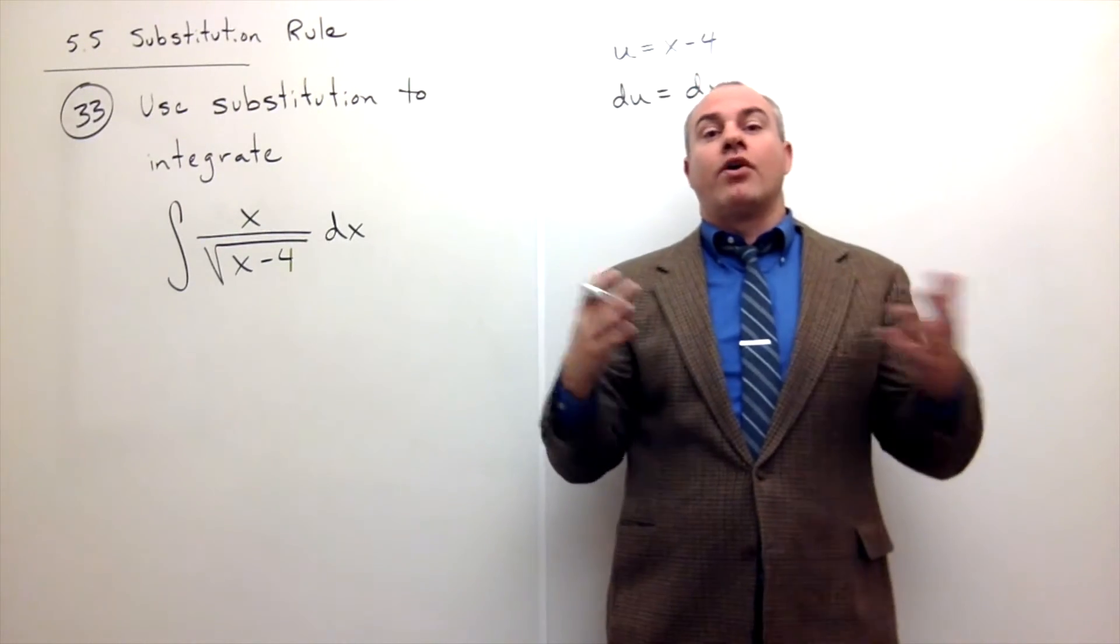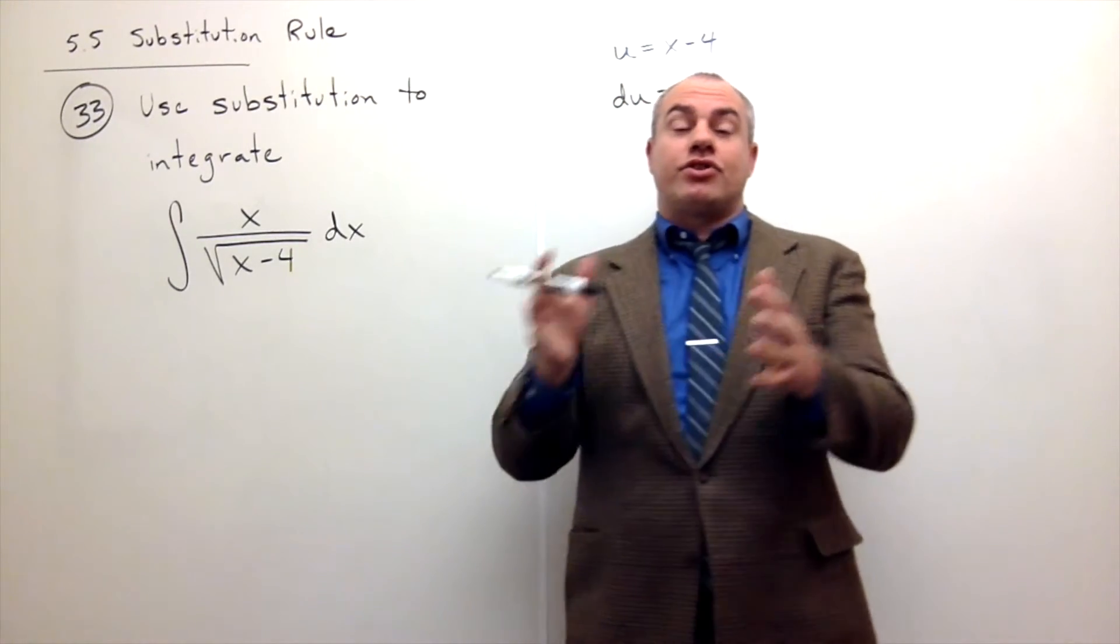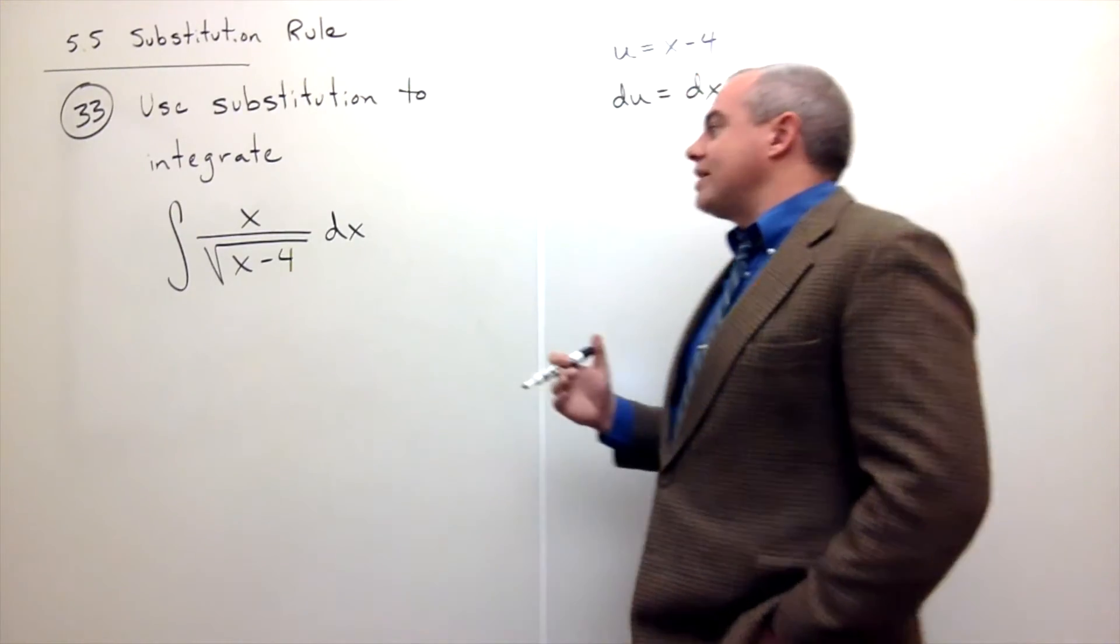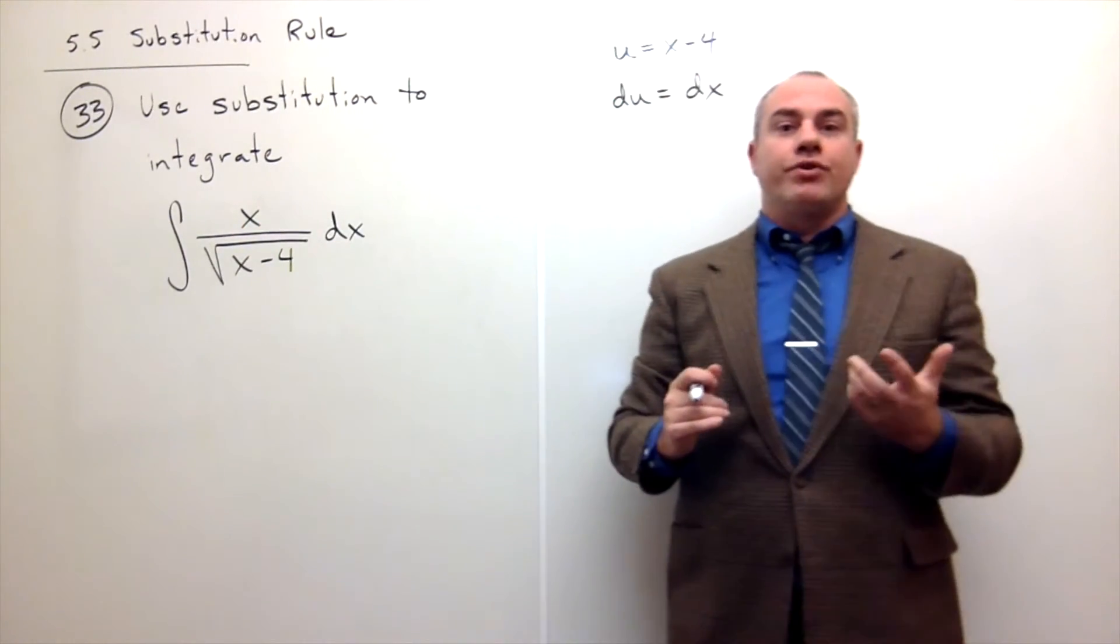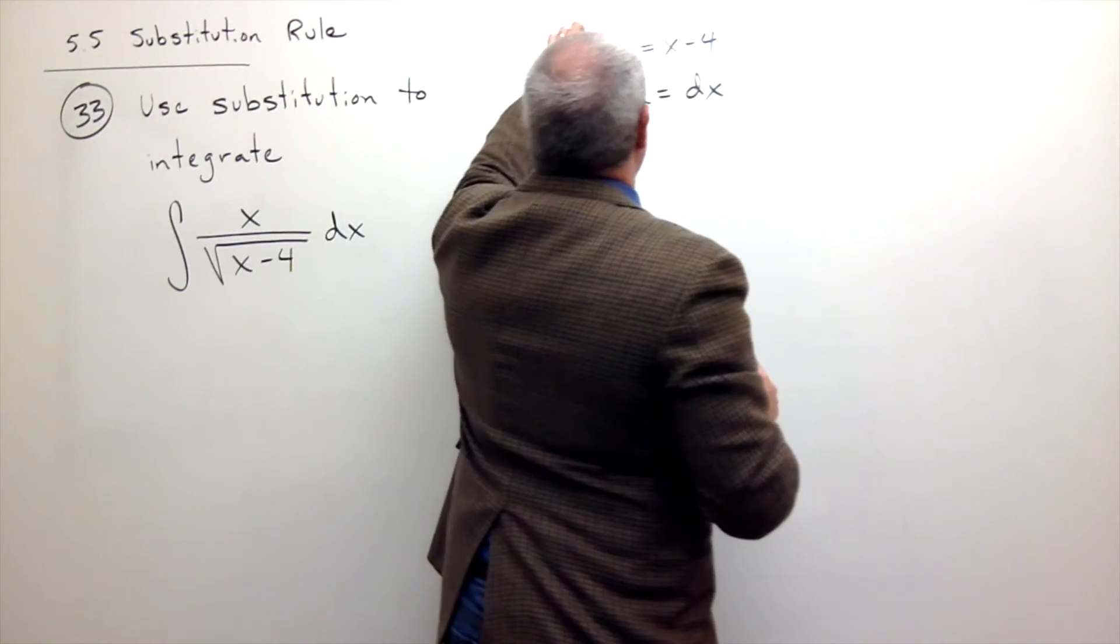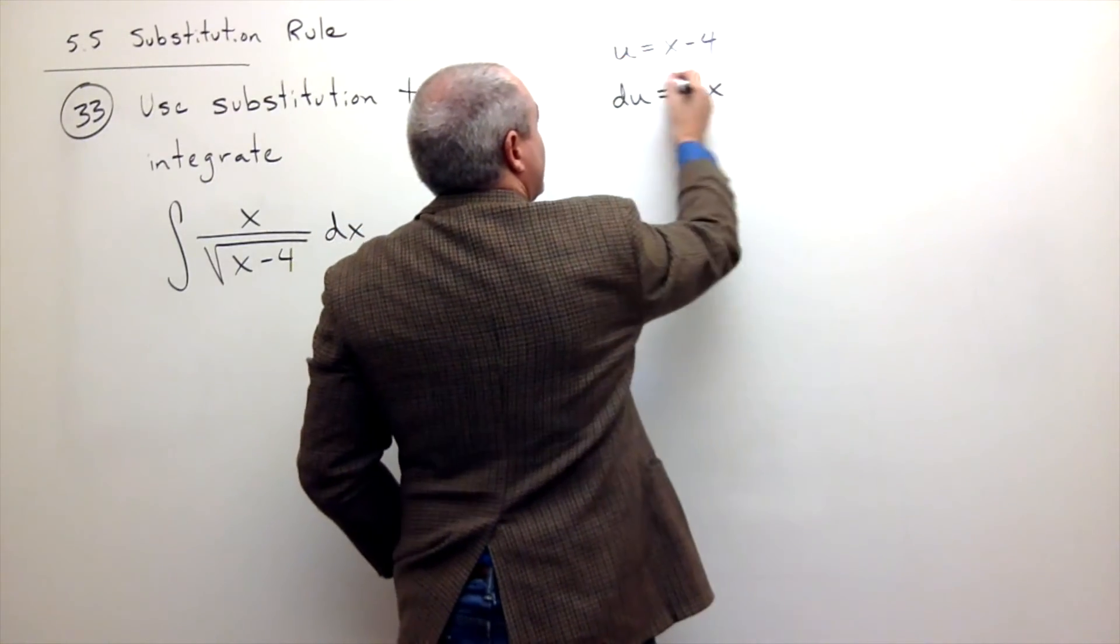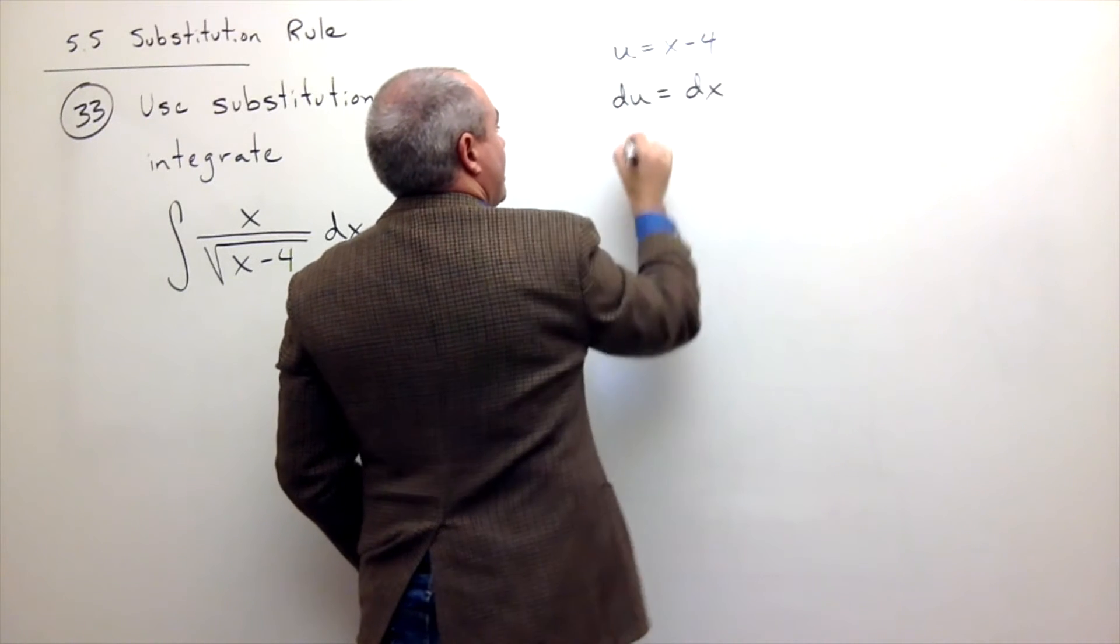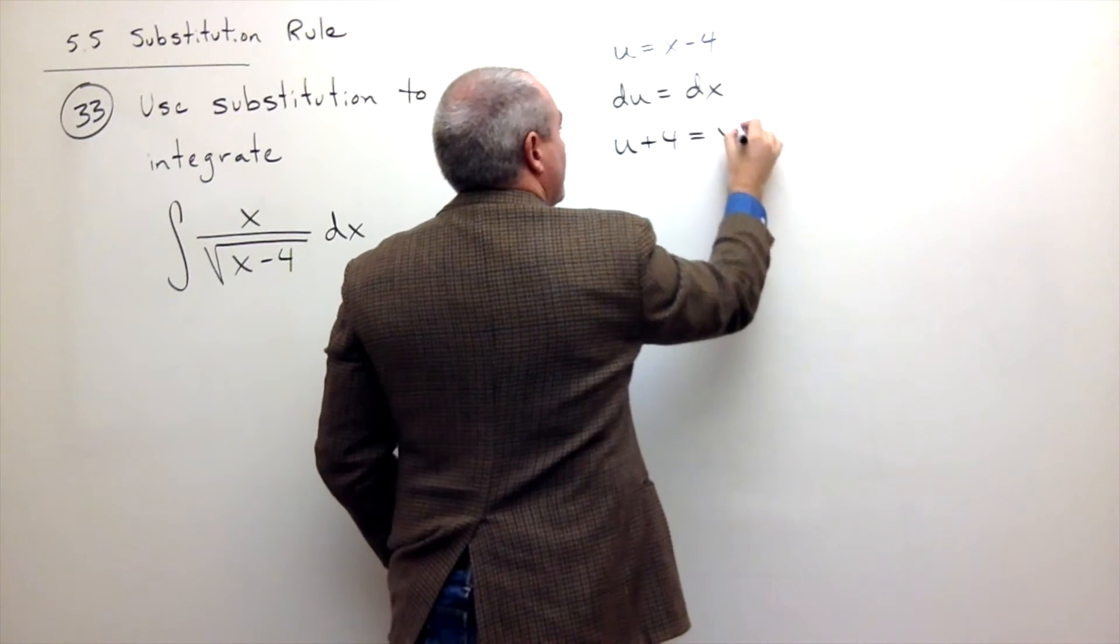You have to replace all x's with u's. You can't just have lone x's hanging around. When you make a substitution, all the x's need to change into u's. To do that, I need to know what x is in terms of u's. Looking at u equals x minus 4, I could just as easily solve this for x. If I do, I just move the 4 to the other side and get u plus 4 equals x.